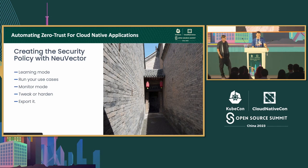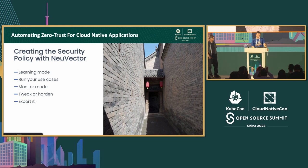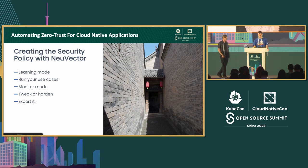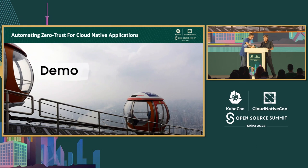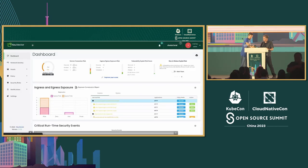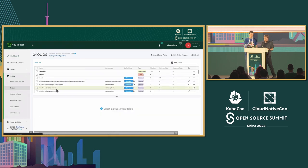Now we'll run through the process of creating a security policy for your application with NuVector. We'll put NuVector in learning mode, run some use cases — basically do everything a normal user would do with the app — then turn the policy to monitor mode to show how it works, tweak and harden it, and finally export it to automate deployment. We'll navigate to Policy and Groups, where NuVector stores the Zero Trust policies.